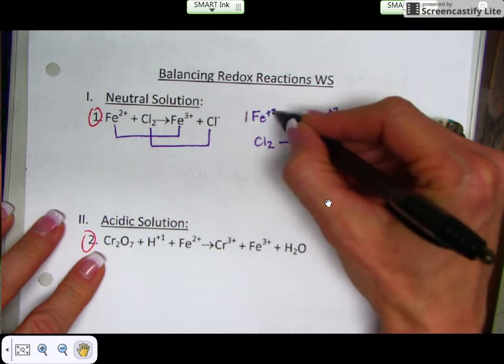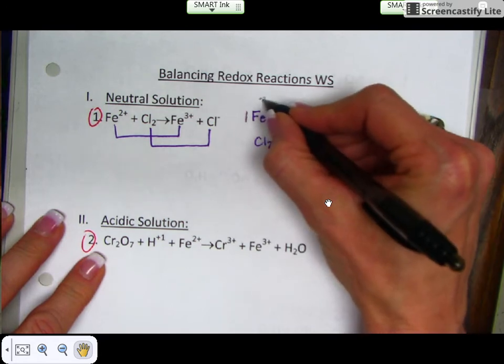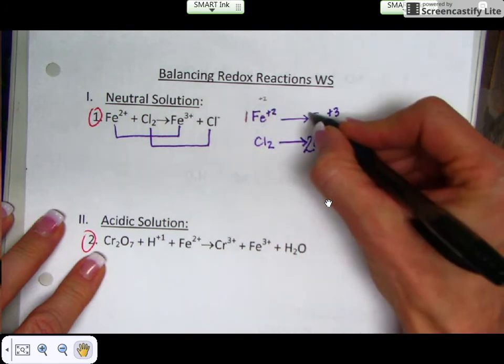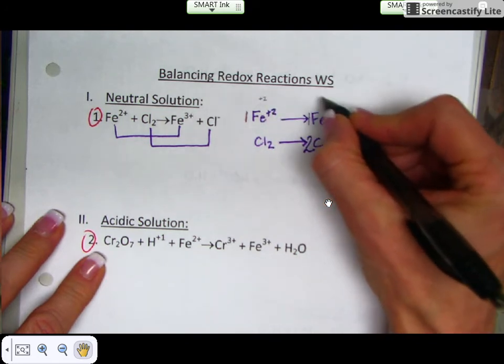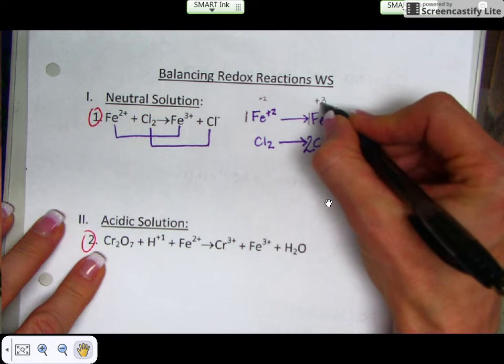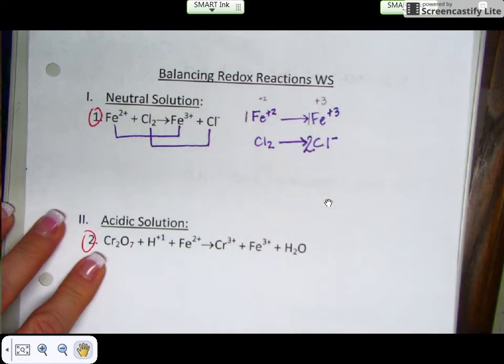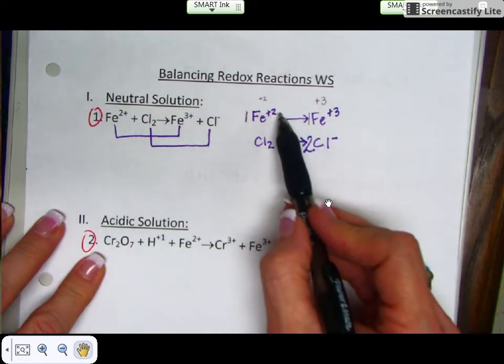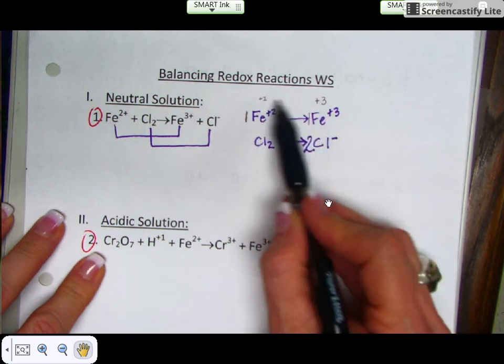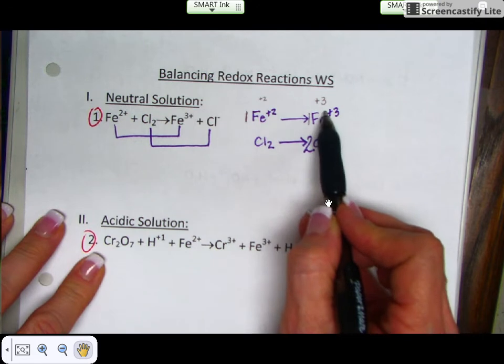So on this side, 1 times a +2 gives me a +2 on this side. This is understood 1. 1 times a +3 gives me a +3 on this side. Well, we don't have equal charge on each side, so we need to add electrons. You always add the electrons to the most positive side.